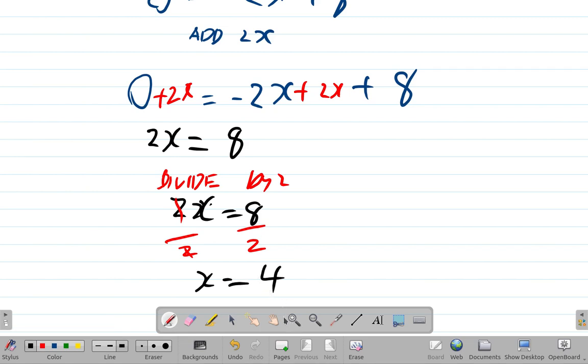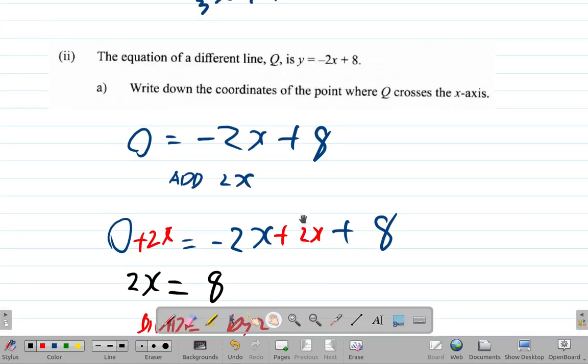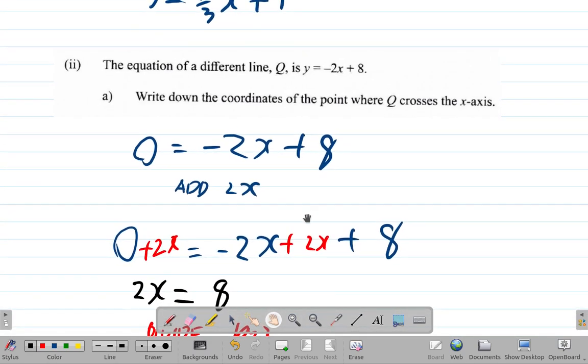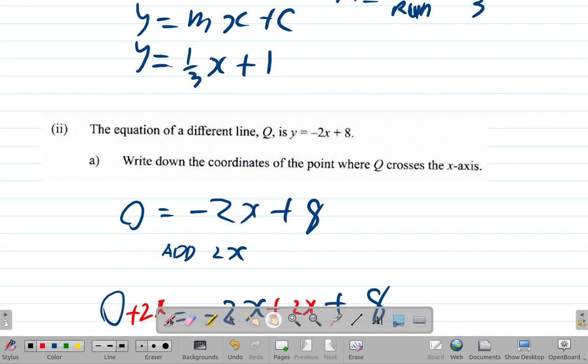It would cut the x-axis at x equals 4. Write down the coordinates of the point where Q crosses the x-axis. The coordinates are x is 4, y is 0, which is (4, 0).